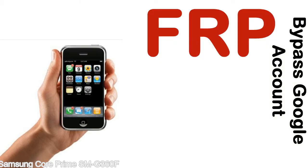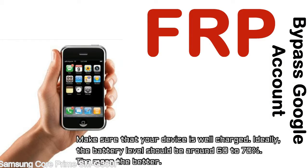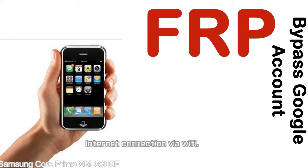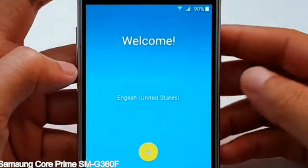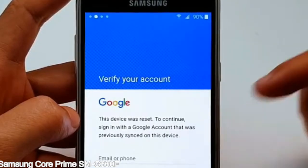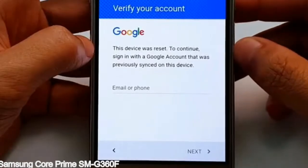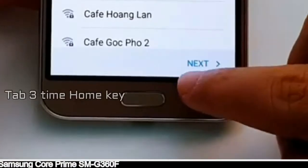Before starting: one, make sure that your device is well charged. Ideally the battery level should be around 60 to 70 percent — the more the better. Two, internet connection via WiFi. Here is a step-by-step guide on how to bypass Google account on your Samsung Galaxy device.